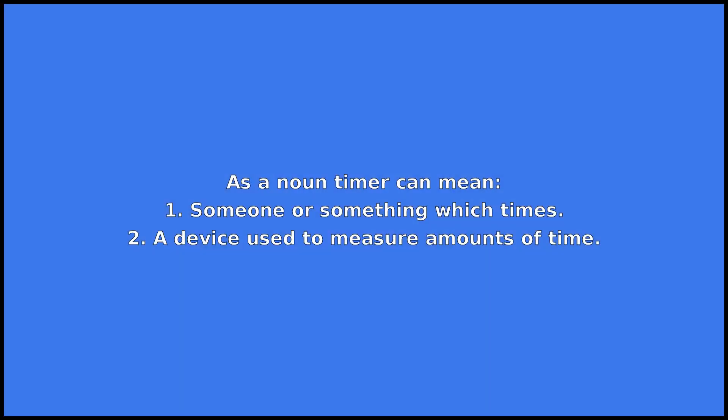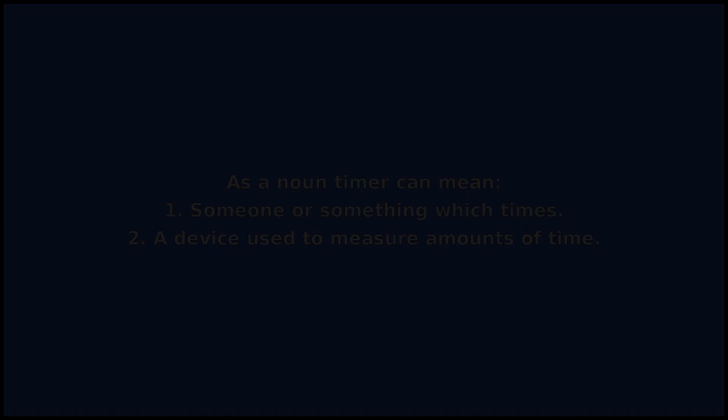Timer is a noun. As a noun, timer can mean: 1. Someone or something which times. 2. A device used to measure amounts of time.